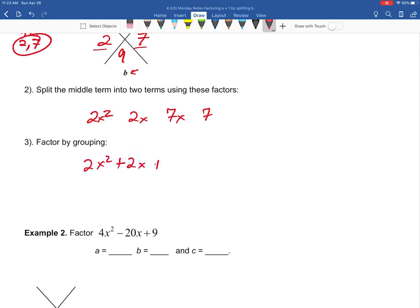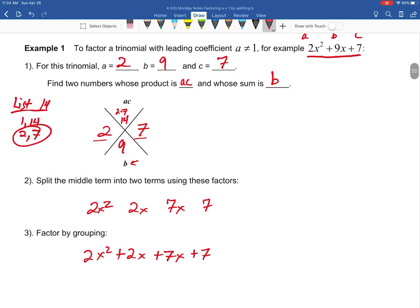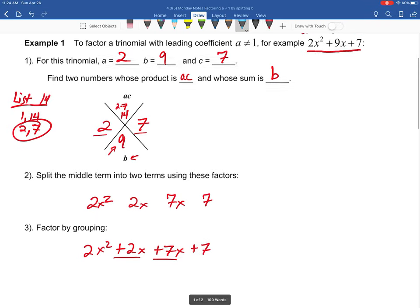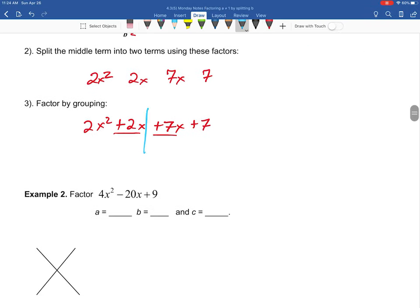So you've got your 2x² + 2x + 7x + 7. Again, everything has to be positive in this case because notice your b value is a positive 9 right there. So that's why we have a positive 2x and a positive 7x. And then we're going to split down the middle and factor by grouping.